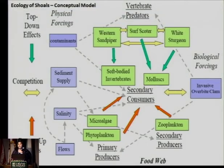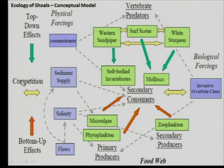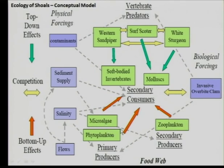Here's an overarching conceptual model of what we foresee happening within the tidal flats. Physical forcings control our secondary consumers — soft-bodied benthic invertebrates. The invertebrate community can be preyed upon by vertebrate predators such as western sandpipers, scoters, and fish. They're also affected by food resources such as phytoplankton and secondary producers, and influenced by physical forcing such as contaminants, sediment supply, salinity, and freshwater flows — making a complicated system with top-down effects from vertebrate predators and bottom-up effects from invertebrate food resources.